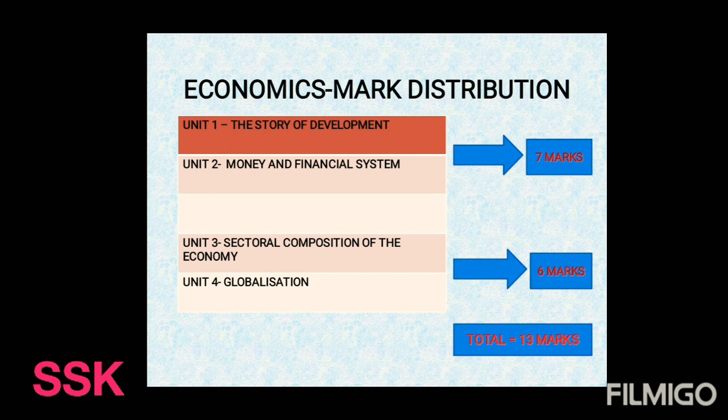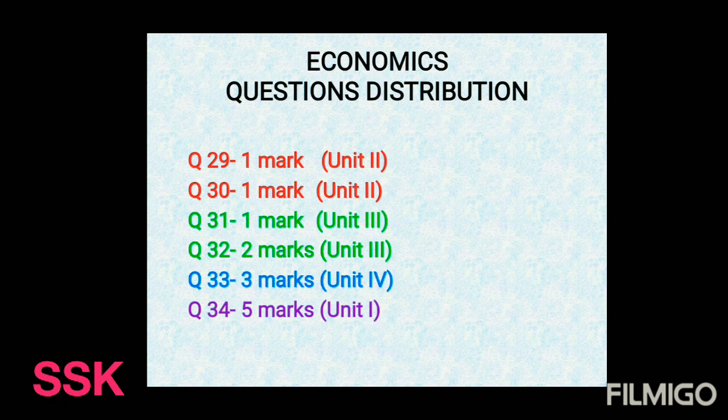The next part is the economics mark distribution. Economics total mark is 13 marks: 7 marks are from unit number 1 and 2, and 3 marks are from unit number 3 and 4. The total marks for economics is 13. Now let's look at the question-wise mark distribution.